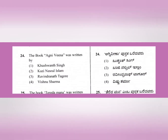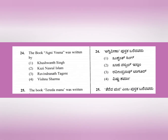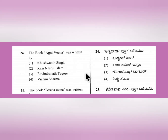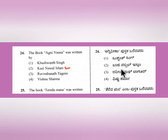Question 24: The book Agni Veena was written by Qazi Nazrul Islam - option number 2. Questions about authors and their books are likely to appear in the exam.